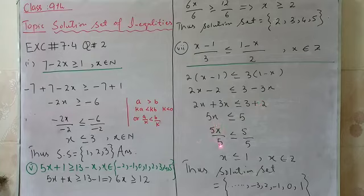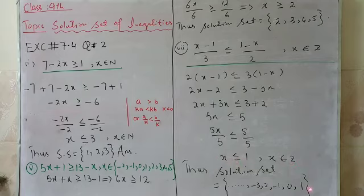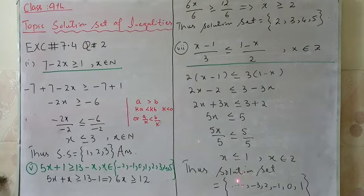We will divide by 5 on both sides. Since we are dividing by a positive number, the inequality will not be changed. 5 cancels with 5, and we get x is less than or equal to 1. Now we have to give the solution set where x belongs to integers. For x less than or equal to 1, we include 0 and 1, and all negative integers: minus 1, minus 2, minus 3, minus 4, and so on. So all negative integers, 0, and 1 are included in this solution set.